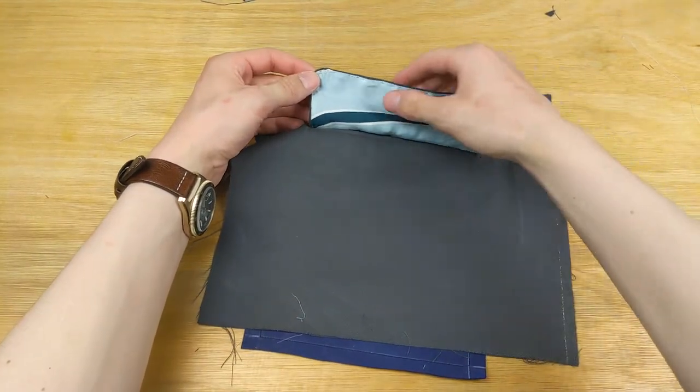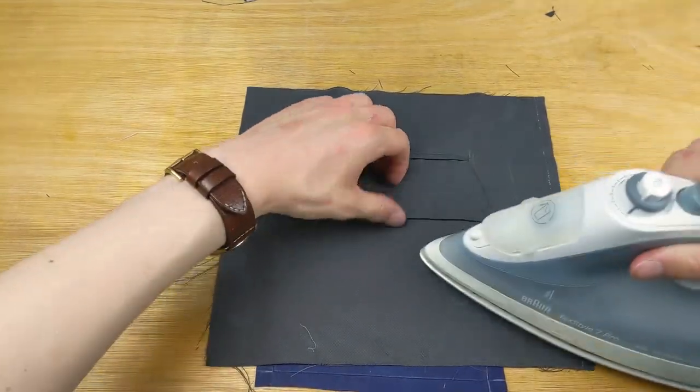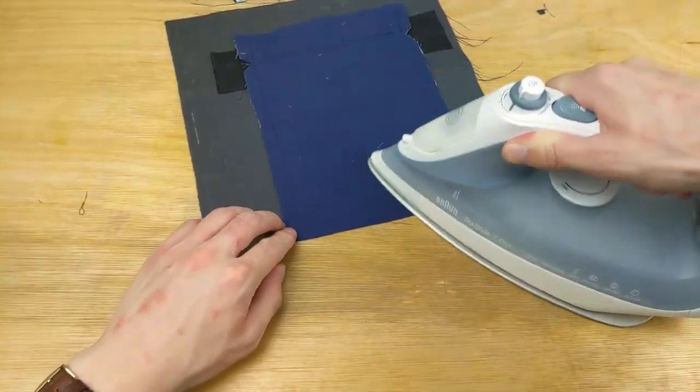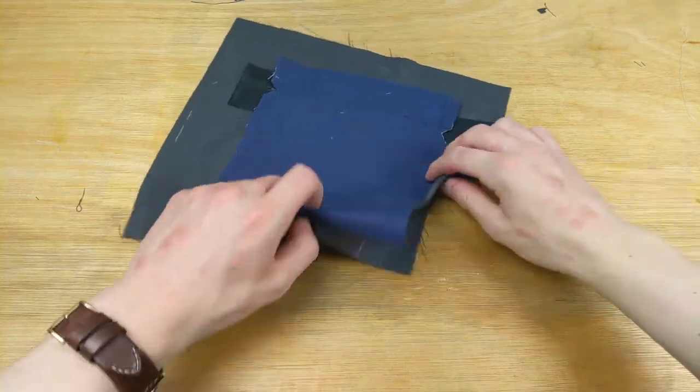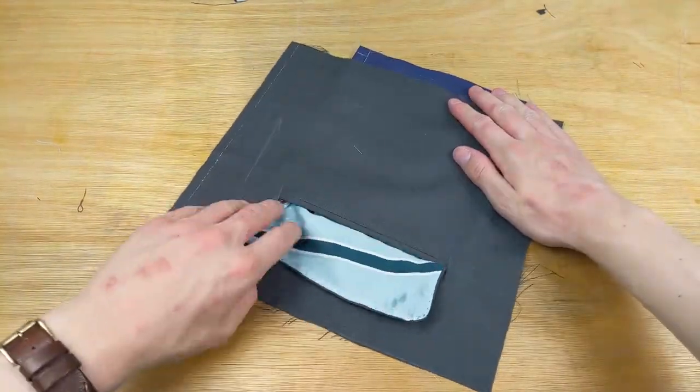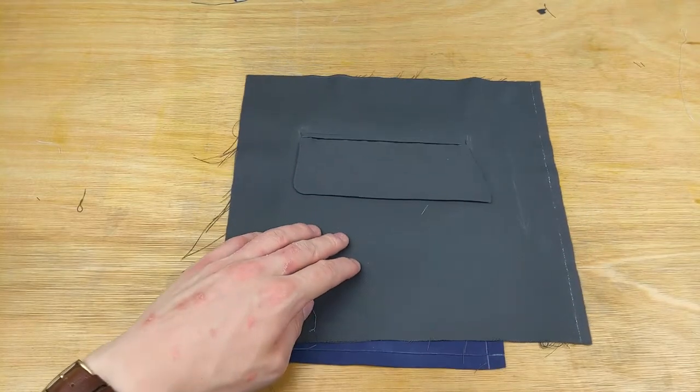To give it a quick iron, we can first move the flap up and iron under there, iron all the cloth flat. Then we can iron the flap too. It's just a case of making it look kind of neat, there's not much to it.